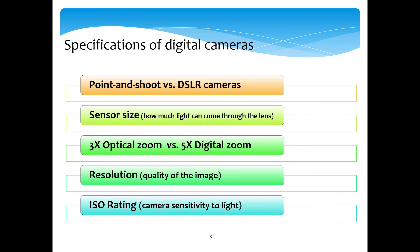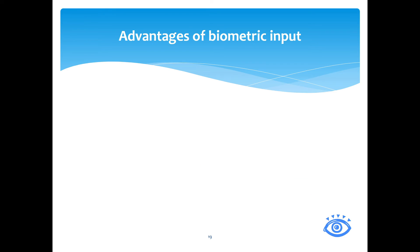Here are some things to bear in mind when buying a digital camera or evaluating a camera on your phone. Consider the sensor size — how much light can come through the lens; the more light, the better. Optical zoom lets you zoom into an image without distortion or pixelation, while digital zoom gives a blocky look. Your resolution is the quality of the image, and your ISO rating is the camera's sensitivity to light — the more sensitive, the better the image.